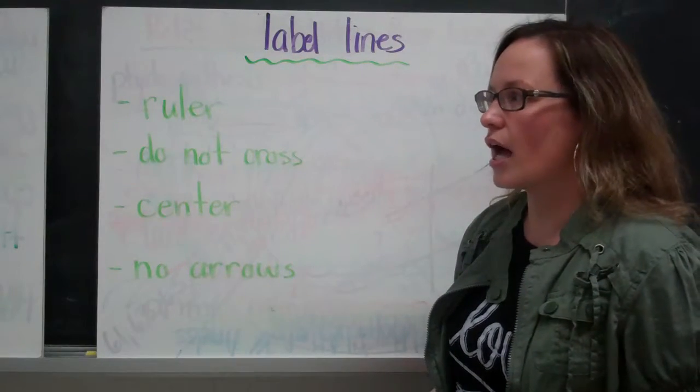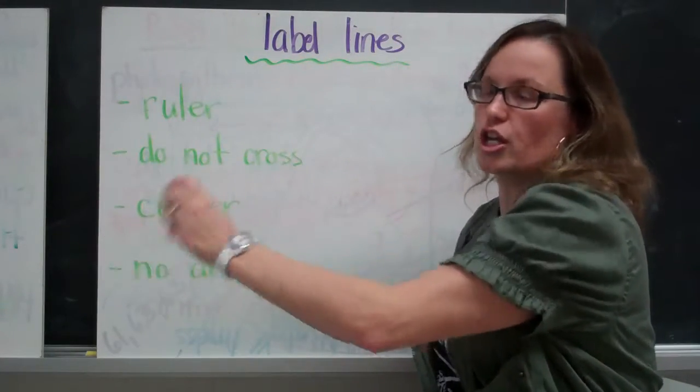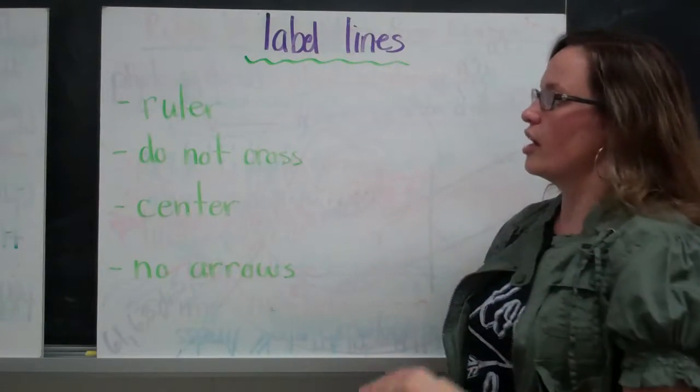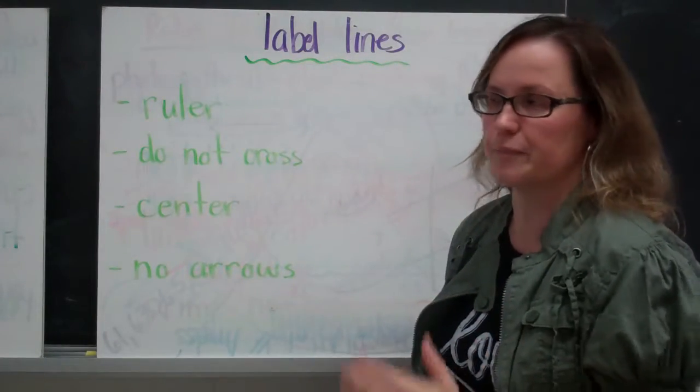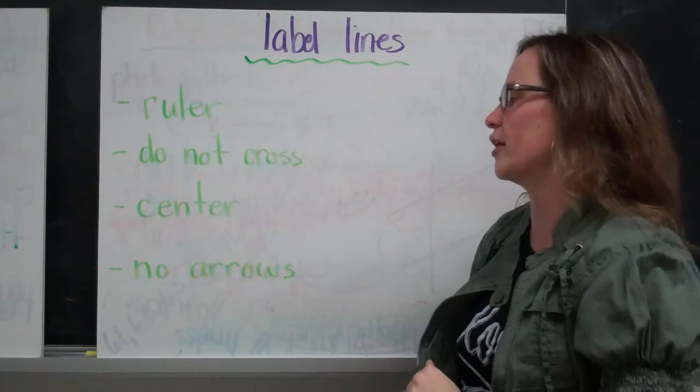Label lines. These are the lines that go from your illustration to its label. They should always be done with a ruler. The brackets and the label line should be done with a ruler.